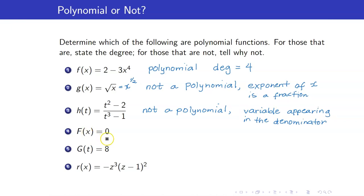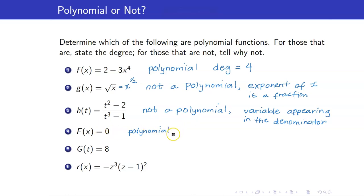What about f of x equals 0? Yes, this is a polynomial — it only means that all of your coefficients are 0. However, this is a special case called the zero polynomial. It has no degree. No degree is different from degree 0, as I will show you.